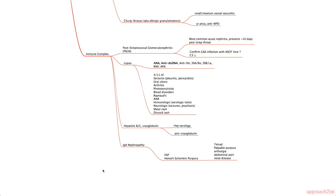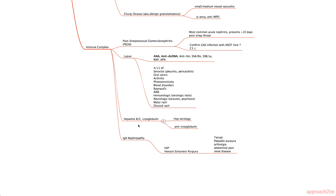The immune complex category includes post-streptococcal glomerulonephritis (PSGN), the most common acute nephritis, occurring mostly in young and old populations about 10 days post strep throat. Lab tests include ASOT (antibody titer to streptolysin O), which is often elevated, and low complement C3. Lupus is also on the differential — the mnemonic is SOAP BRAIN MD, requiring 4 out of 11 criteria — with tests including ANA and anti-dsDNA. Hepatitis B and C and cryoglobulin also fall under this category.